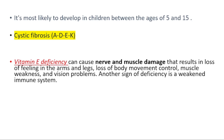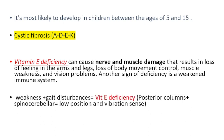The most important sign of vitamin E deficiency is nerve and muscle damage. Patients will have loss of feeling in the arms and legs, loss of body movement control, muscle weakness, and vision problems. Another sign of deficiency is weakened immune system. Vitamin E deficiency affects the posterior columns and spinocerebellar tracts, causing low position and vibration sense. As a result, we will see weakness and gait disturbances in these patients.